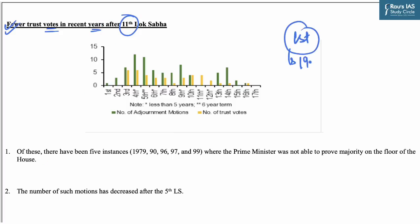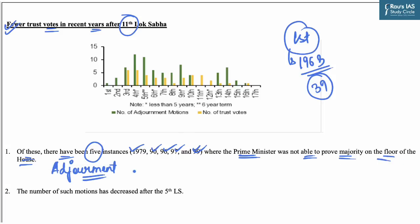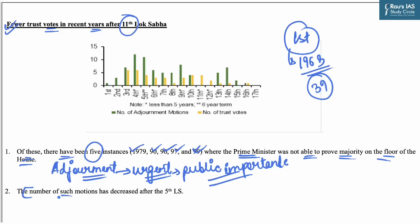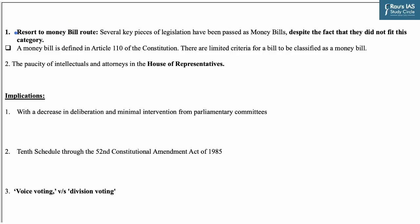Another concern relates to fewer trust votes in recent years after the 11th Lok Sabha. The first no-confidence motion was moved in 1963, and till date 39 trust votes have been moved in Lok Sabha, with five instances — in 1979, 1990, 1996, 1997 and 1999 — where the Prime Minister was unable to prove majority on the floor of the House. Adjournment motions, moved to draw attention to urgent matters of public importance, have also decreased after the 5th Lok Sabha; in the 17th Lok Sabha no adjournment motions have been taken up so far. Additionally, several key pieces of legislation have been passed as money bills despite not fitting that category — a money bill is defined under Article 110 of the Constitution.